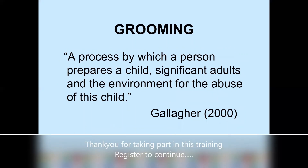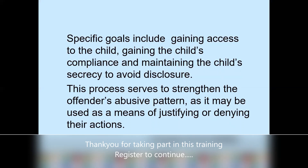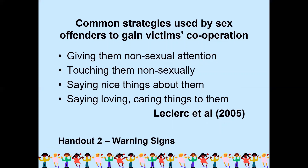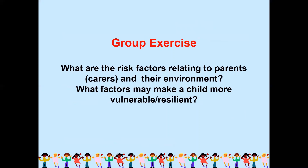Grooming is a process by which a person prepares a child, significant adults, and the environment for the abuse of that child. The specific goals include gaining access to the child, getting the child's compliance, and maintaining the child's secrecy to avoid disclosure. This process serves to strengthen the offender's abusing pattern. Common strategies used by sex offenders to gain victims' cooperation include giving non-sexual attention, non-sexual touching, saying nice things, and saying loving or caring things to them. Warning signs — group exercise: what are the risk factors related to parents and carers in their environment?